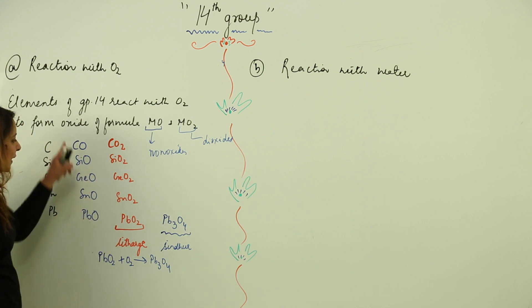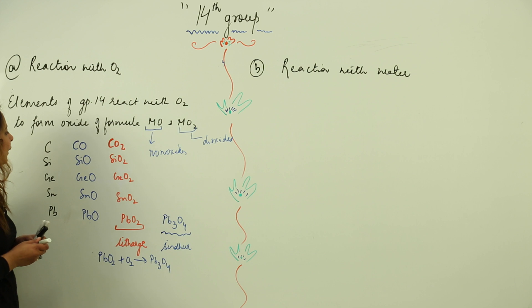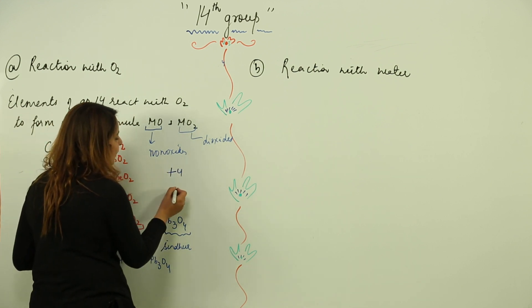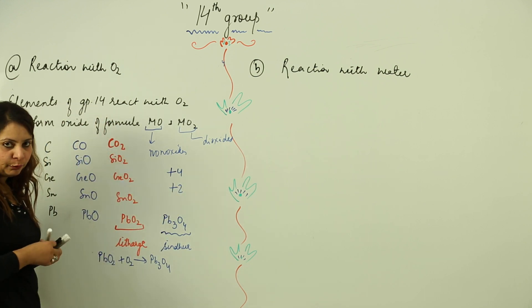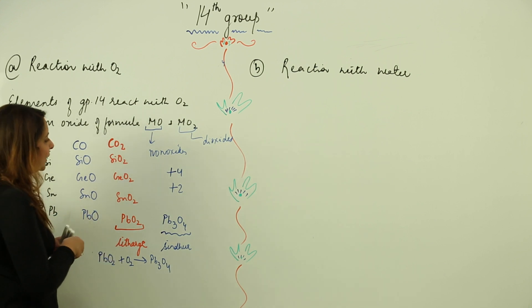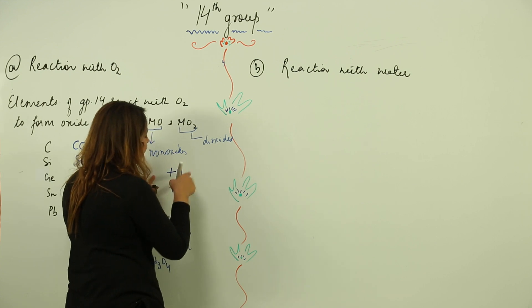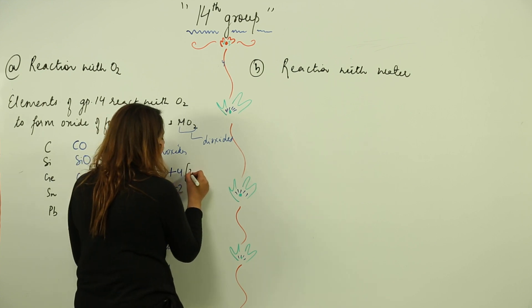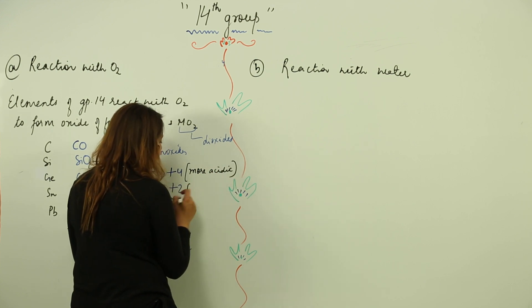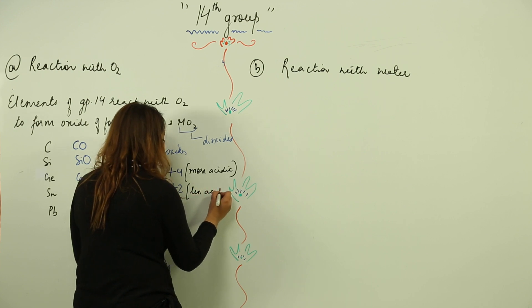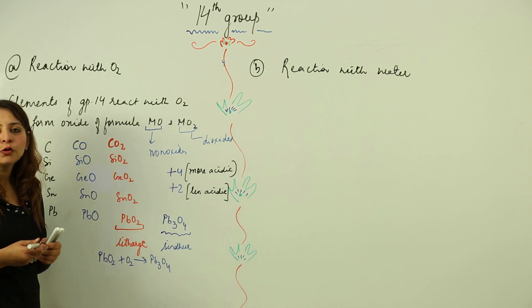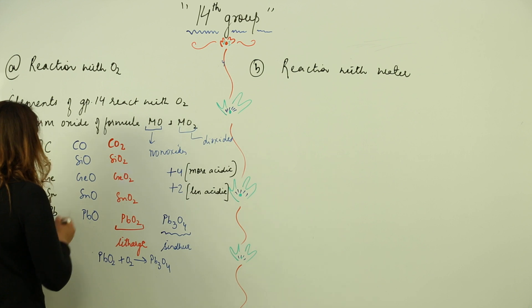The other members exist only in monoxides. We see that elements making use of their +4 oxidation state are more acidic, and those making use of the +2 oxidation state are comparatively less acidic. So the nature of their oxides depends on the oxidation state they are using.